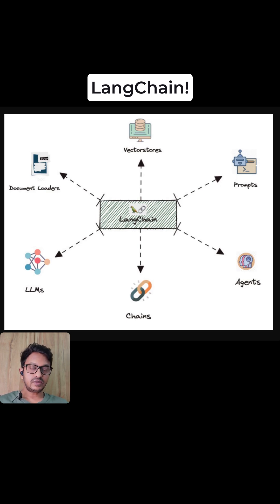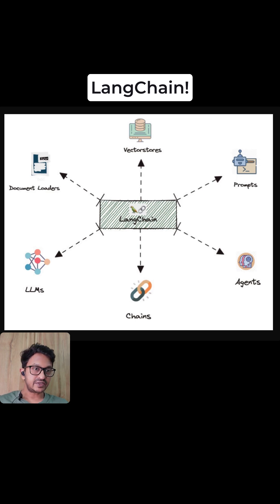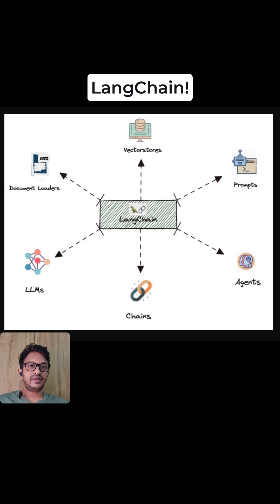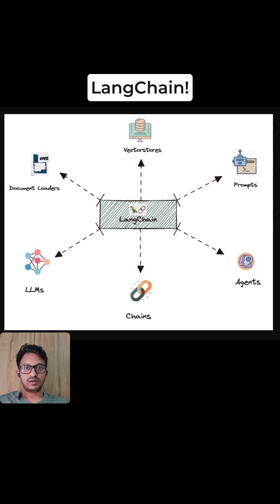How is this possible? Because LangChain has different components, like prompt templates — reusable templates for structuring LLM inputs with variable substitution for dynamic content. Using LangChain, you can make use of any LLMs, as it is LLM-agnostic. You can use closed-source or open-source LLMs. Integration with various LLM providers is possible using LangChain.